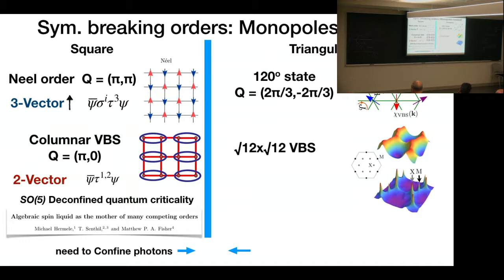On the other hand, for triangular lattice, the traditional order is like this 120-degree order. Even after we specify some certain direction to specify this plane of this 120-degree order, there is still one degree of freedom associated with the xy-plane rotation. So we see that we have to use a complex three-vector to describe this symmetry-breaking order.